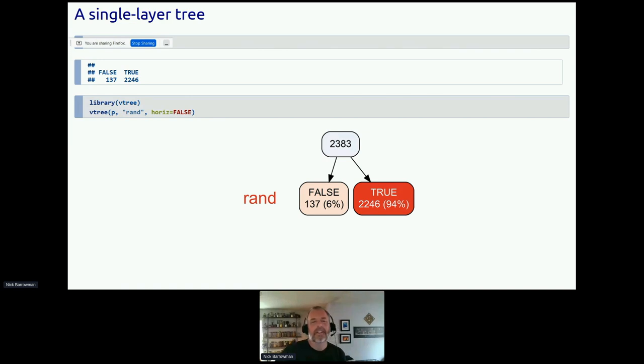So now let's consider a single-layer tree. We could just use the base R function table to get frequencies: 137 that were not randomized, 2,246 that were randomized. If you used vtree instead, and I just want to point out you specify the variable in quotation marks, and you'll see why a little bit later, then you get the same numbers, 137, 2,246. You also get percentages and a colorful diagram.